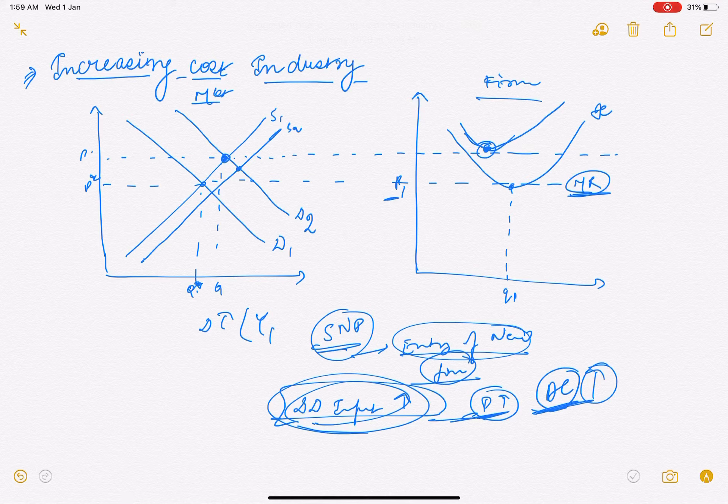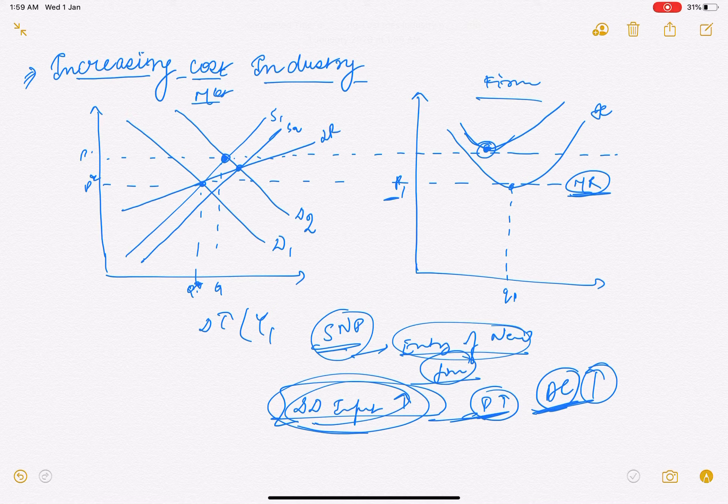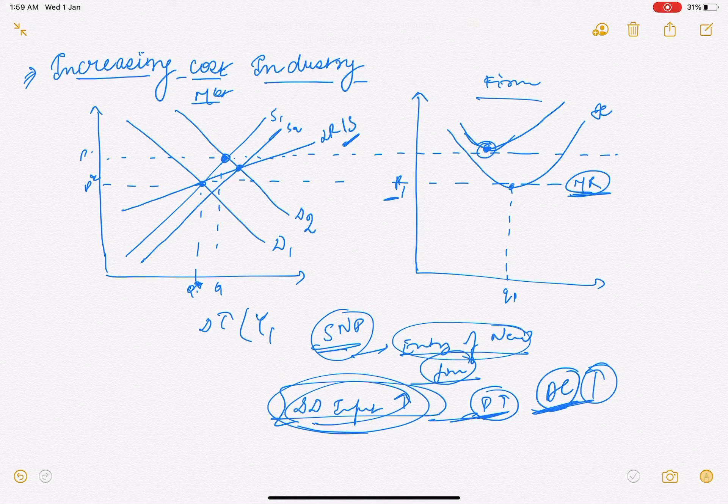So in this case jo hamara long run ke andar jo curve hoga, this would look like this - positive sloping. So this would be our long run industry supply curve. This would be positively sloping.